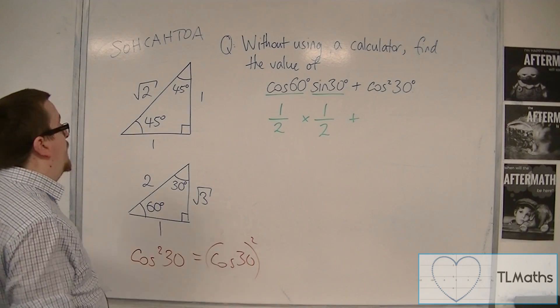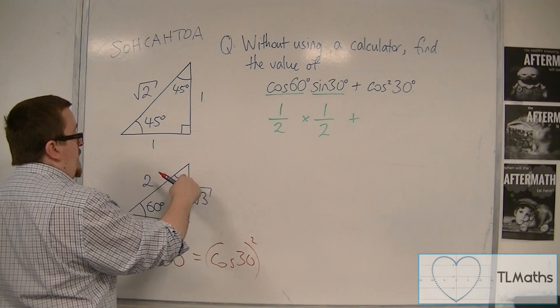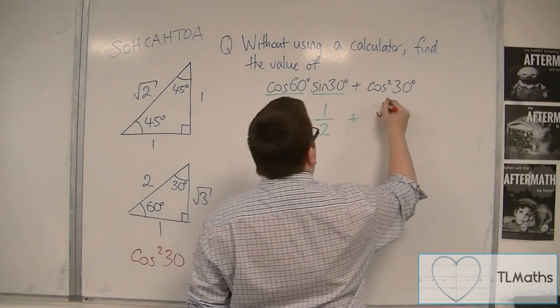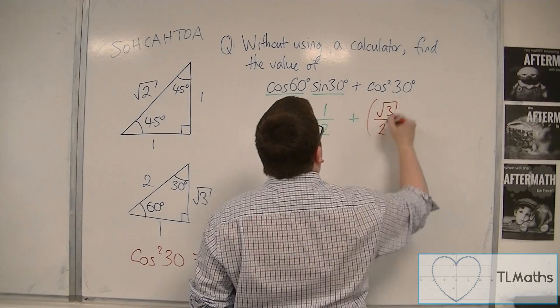So cos of 30, there's the 30, that's the adjacent, that's the hypotenuse, so this is root 3 over 2 squared.